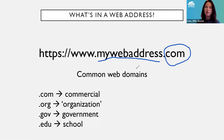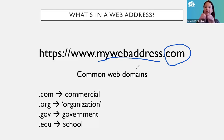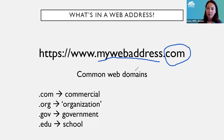Every website will be something-dot-com, dot-org, dot-gov, dot-edu, dot-net, dot-TV — there are a lot, but it'll always be something-dot-something. The end part — what comes after the dot — can tell you a little bit about what kind of website you're looking at. When you see it in your search results, it'll give you useful information.